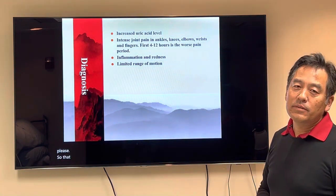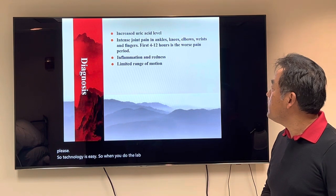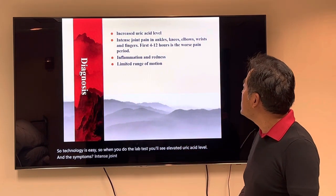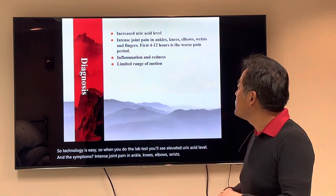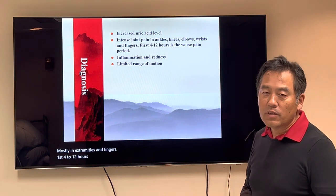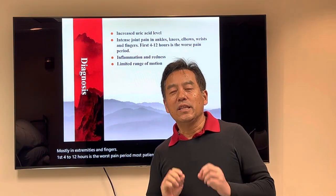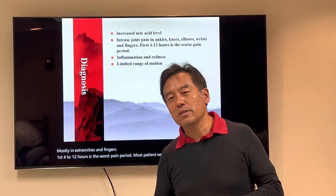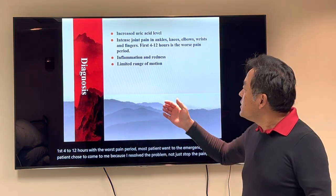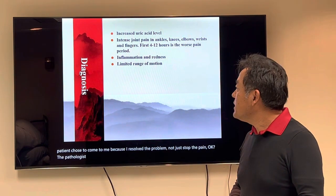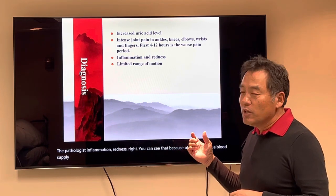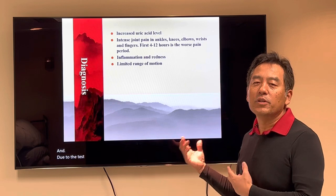So diagnosis is easy. When you do the lab test, you will see elevated uric acid levels. The symptoms include intense joint pain in the ankle, knees, elbows, wrists, mostly in the extremities, and fingers. The first four to twelve hours is the worst pain period. Most patients went to the emergency room, but my patients chose to come to me because I resolve the problem, not just stop the pain. You can see inflammation and redness due to the local tissue blood supply issues. And due to the intense pain, you will have a limited range of motion too.